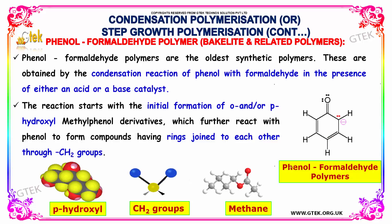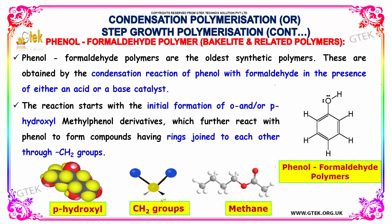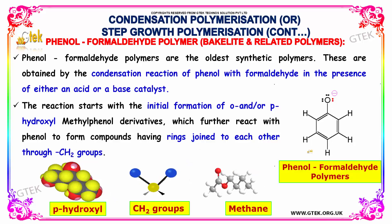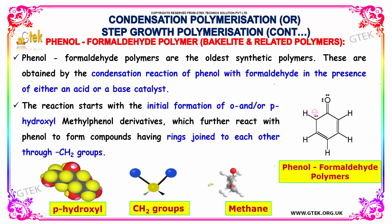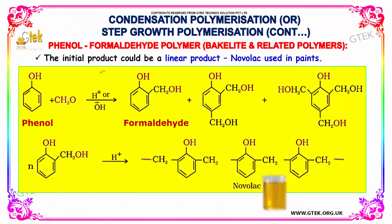The reaction starts with the initial formation of an ortho or para hydroxyl methylphenol derivatives, which further react with phenol to form compounds having rings joined to each other through CH2 groups. The initial product could be a linear product which can be used as Novalac, used in paints.